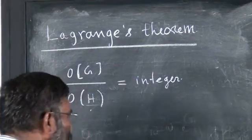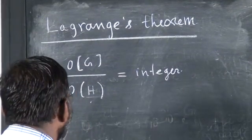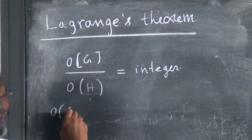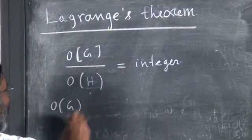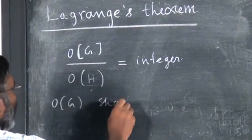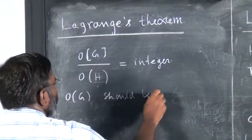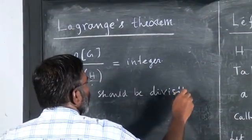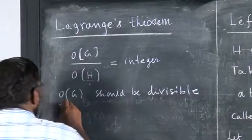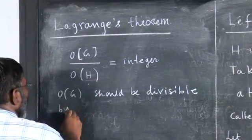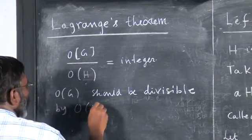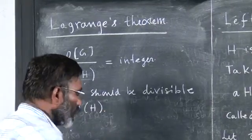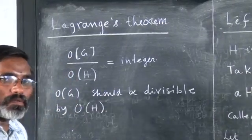The theorem states that the order of the group is divisible by the order of the subgroup — that is, order of the subgroup should divide the order of the group. This is what we need to prove.